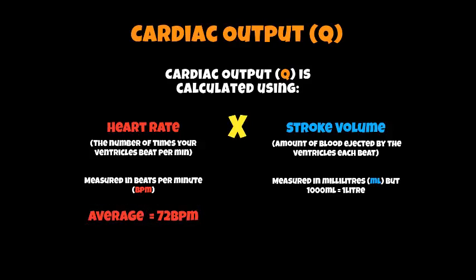For your exams you will need to know the average of each of those three things: heart rate, cardiac output, and stroke volume. The average heart rate for an individual is 72 beats per minute, and the average stroke volume for an individual is 70 millilitres.